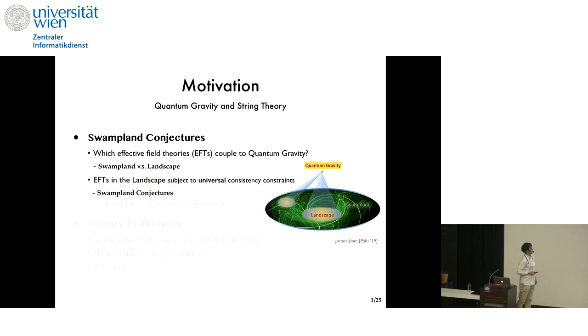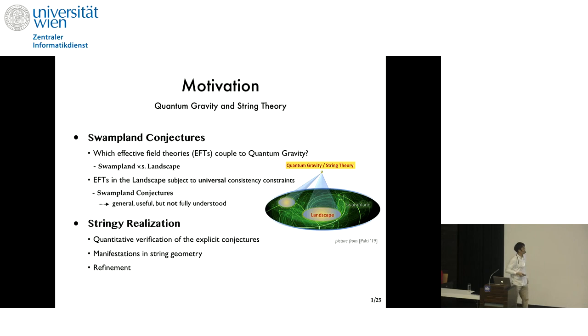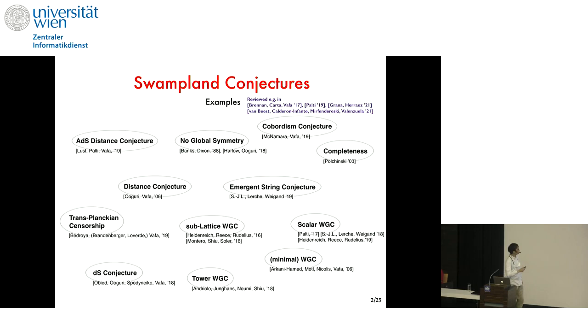Every EFT in the landscape is then subject to certain universal consistency constraints that are known as the swampland conjectures. These contextual constraints are general in scope in that they do not rely a priori on string-theoretic arguments, and they are sometimes useful for phenomenology, but they are not fully understood or proven. To better understand them, we can actually use string theory as a tool.